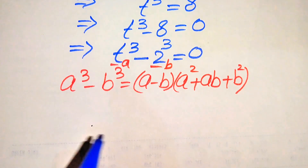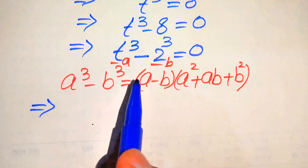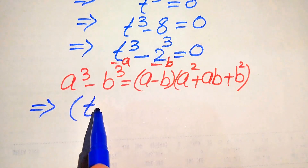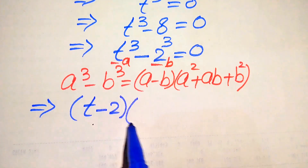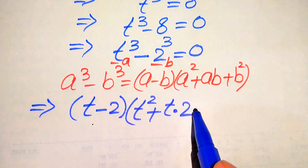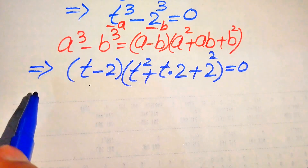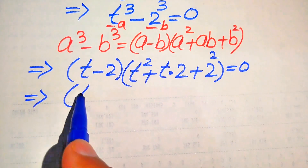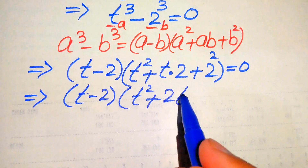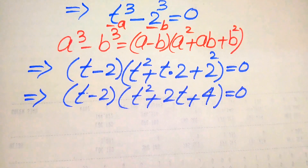We substitute a equals t and b equals 2 into the right hand side of the formula. After putting these values in, we get: (t minus 2)(t squared plus 2t plus 4) equals 0, where 2 squared equals 4.